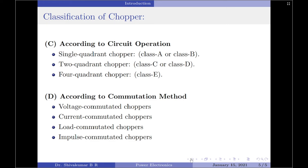The third and the last chopper is the 4 quadrant chopper, in which the output voltage and current both can be positive or negative. Both can be positive or negative and this creates a class E chopper.